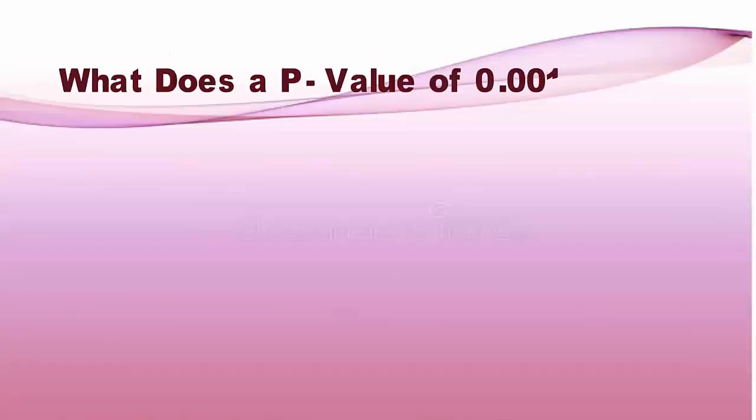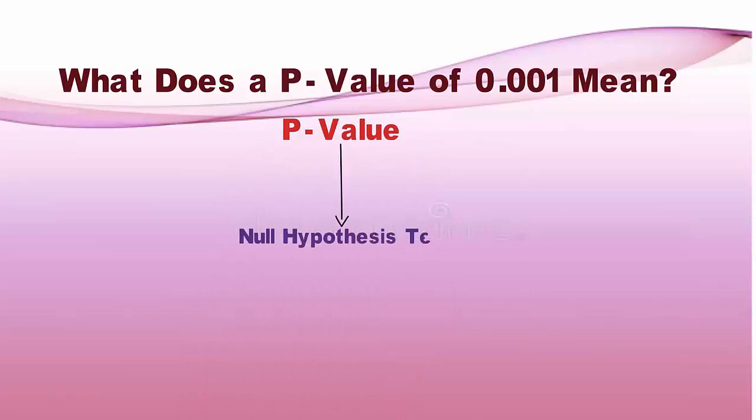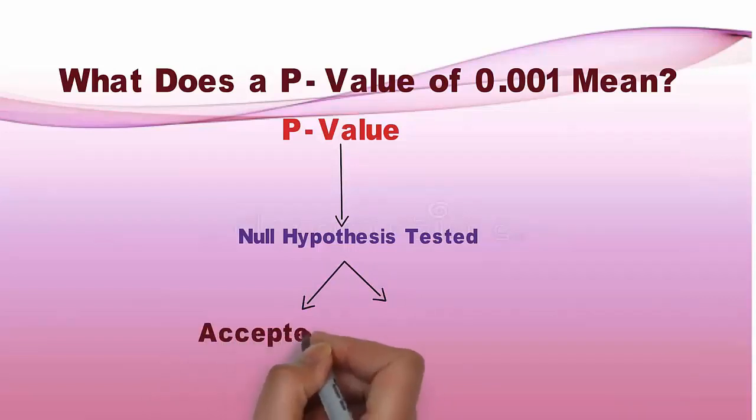What does a P-value of 0.001 mean? A P-value of 0.001 indicates that if the null hypothesis tested were indeed true, there would be a 1 in 1,000 chance of observing results at least as extreme. This leads the observer to reject the null hypothesis because either a highly rare data result has been observed, or the null hypothesis is incorrect.